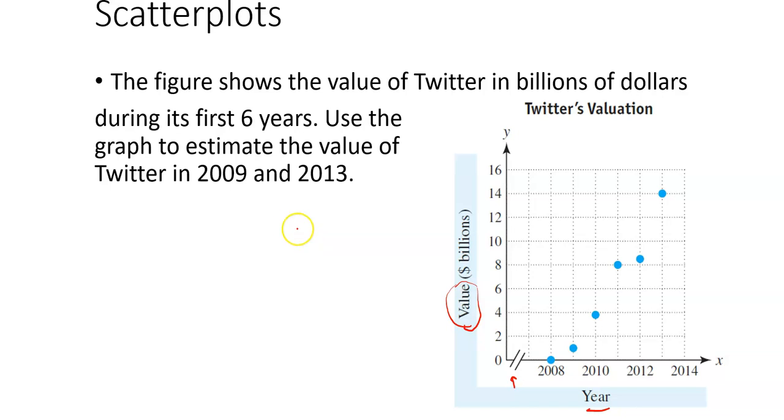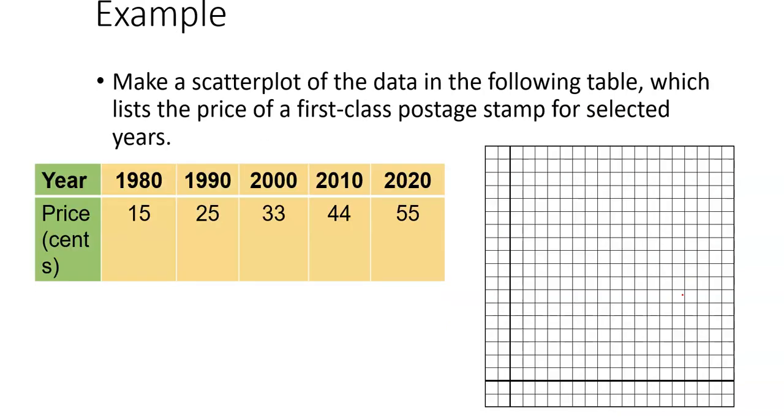The question asks to estimate the value of Twitter in 2009 and 2013. In 2009, we're looking at this point over here, halfway between 2008 and 2010. We follow it across, and it looks like in 2009 it was worth about a billion dollars. How about 2013? If this is 2012 and that's 2014, this halfway mark is 2013. We follow it up to this dot, and then across until we get to 14. So in 2013, it was worth $14 billion. Depending how things go, it might be worth that much again.